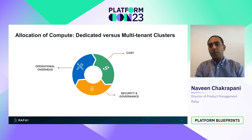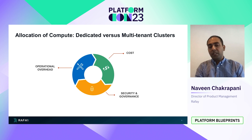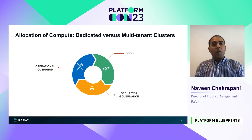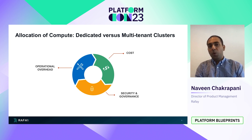From an allocation of compute standpoint, whether it is with dedicated or multi-tenant clusters, there are three important factors that you'll have to think about. One is around cost, second is security and governance, and the third is operational overhead. The cost associated with running multi-tenant cluster infrastructure is much lower compared to dedicated clusters, and this is the top reason why organizations look at a multi-tenant cluster model.